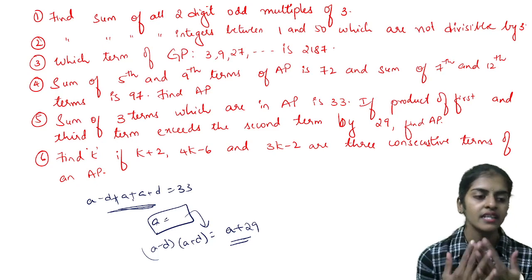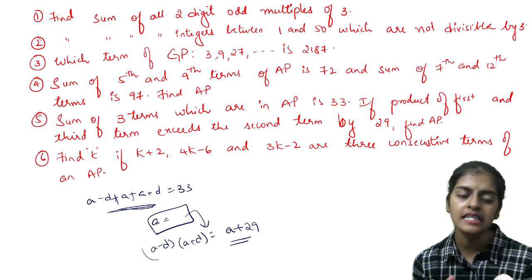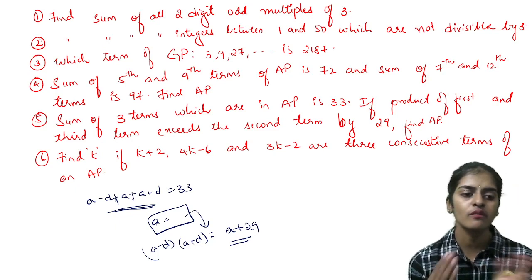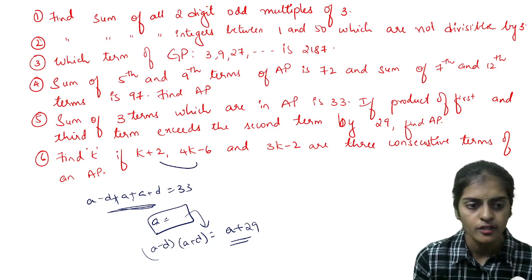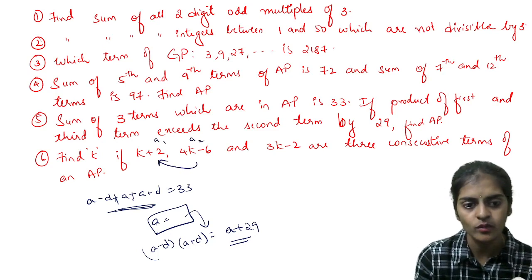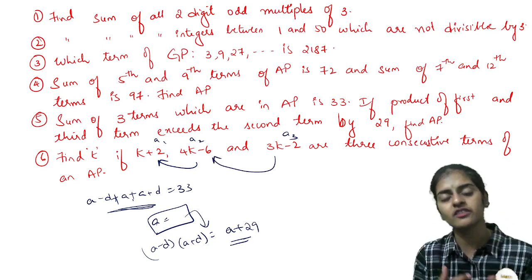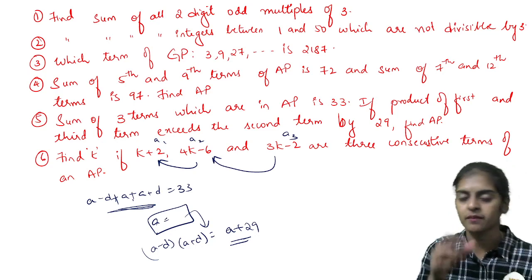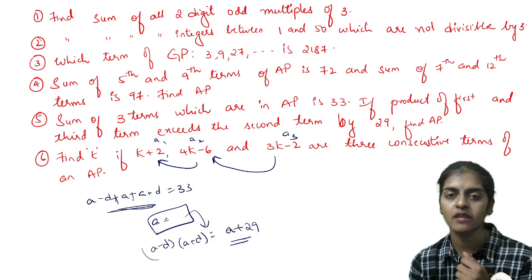Question number six: find k if k plus 2, 4k minus 6, 3k minus 2 are three consecutive terms of an AP. When these are terms of an AP, common difference is the same. If this is a1, a2, a3, I can write a2 minus a1 equals a3 minus a2. Substitute the values, solve for k—simple linear equation.